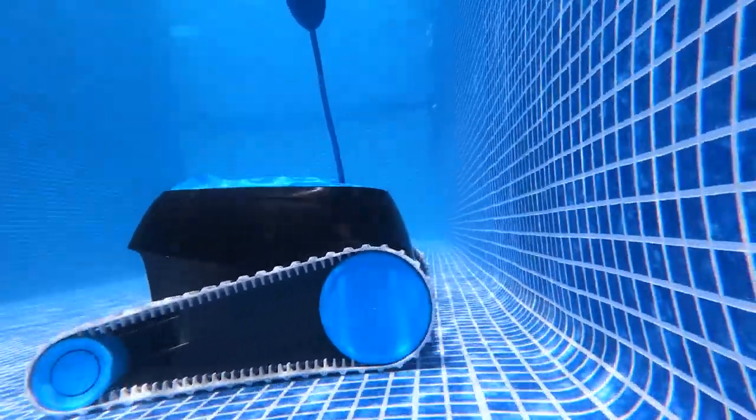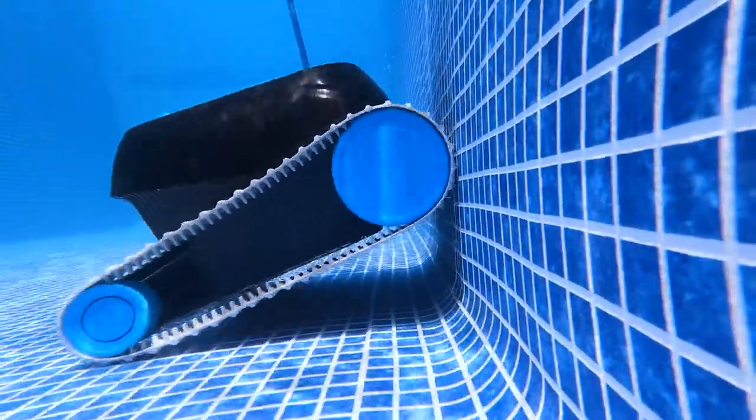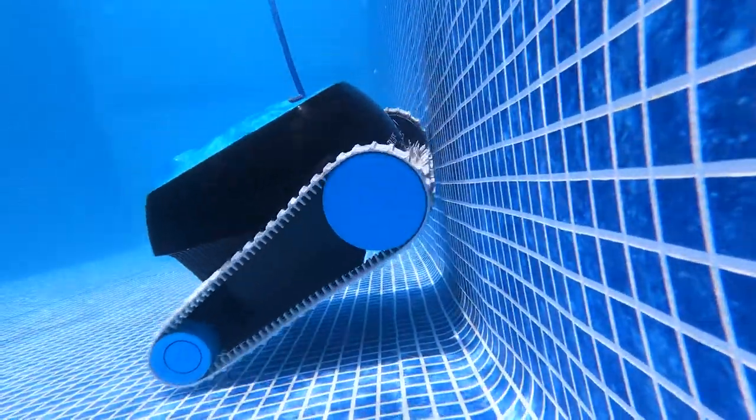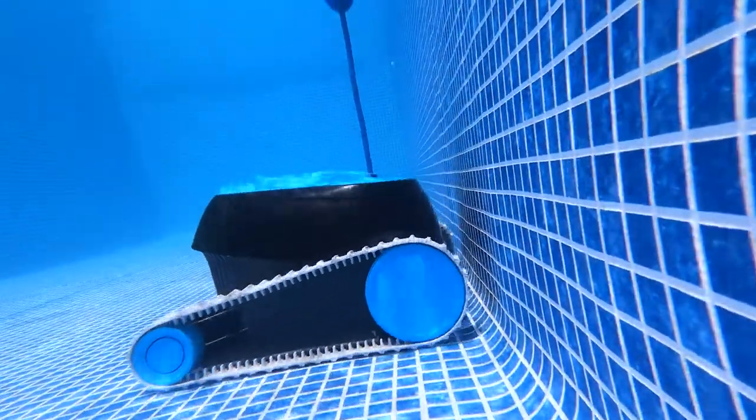While it does have wall climbing as a feature, it's missing the key feature of waterline scrubbing. While a wall climbing cleaner like the Nautilus CC will reach the walls, it will not reach and scrub the waterline.